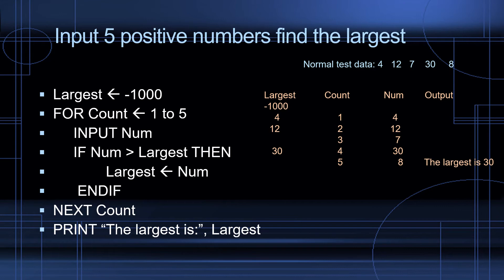If that number is larger than largest, then assign that number to largest. And if, next count, that will allow the loop to repeat 5 times and print the largest is largest.